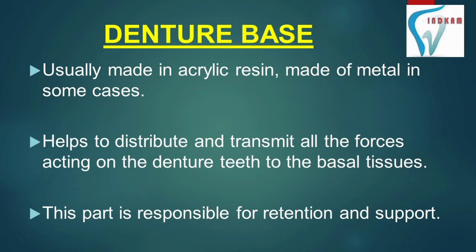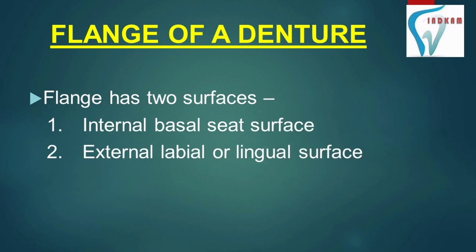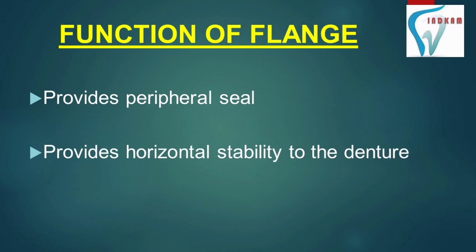The denture base helps to distribute and transmit all the forces acting on the denture teeth to the basal tissues, and it is responsible for retention and support of the denture. The next part is the flange, which is essentially a vertical extension from the body of the denture into one of the vestibules of the oral cavity. On the mandibular denture, it is the essentially vertical extension along the lingual side of the alveolingual sulcus. The flange has two surfaces: internal basal seat area and external labial or lingual surface.